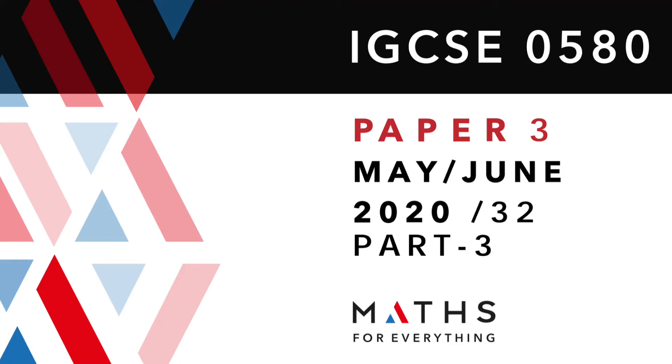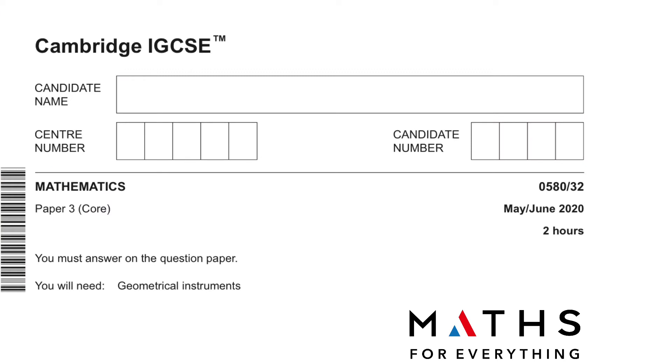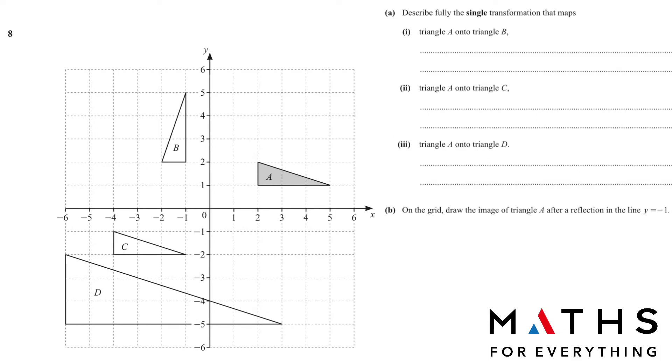Assalamu alaikum. Hi there. Welcome to my channel. Today we are going to solve Cambridge IGCSE Mathematics Paper 3, Code 0580 Variant 3, May June 2020, Part 3. Question number 8.